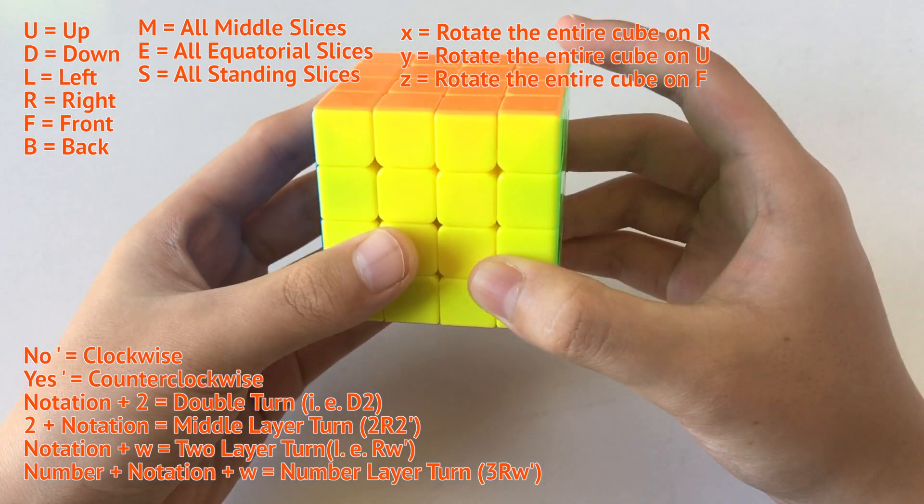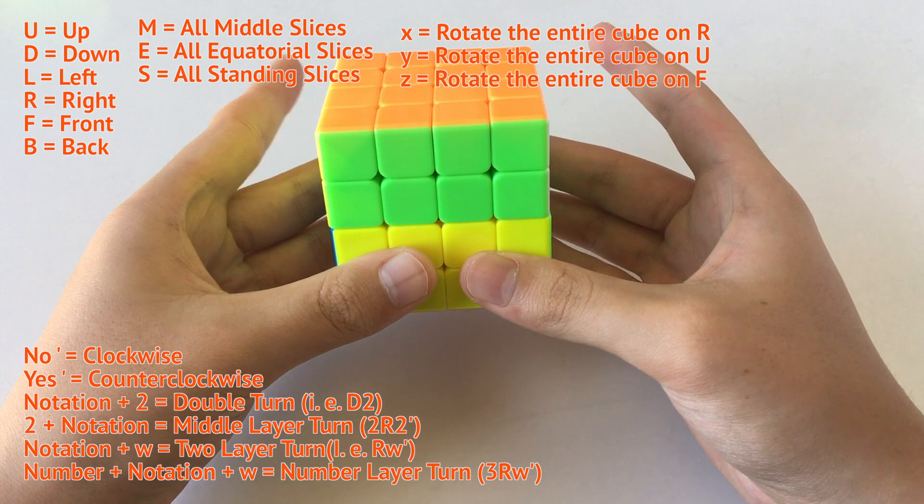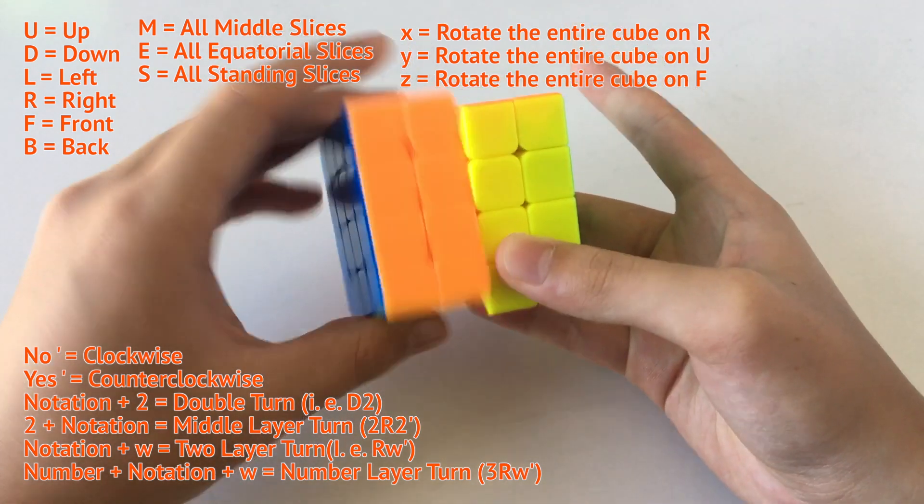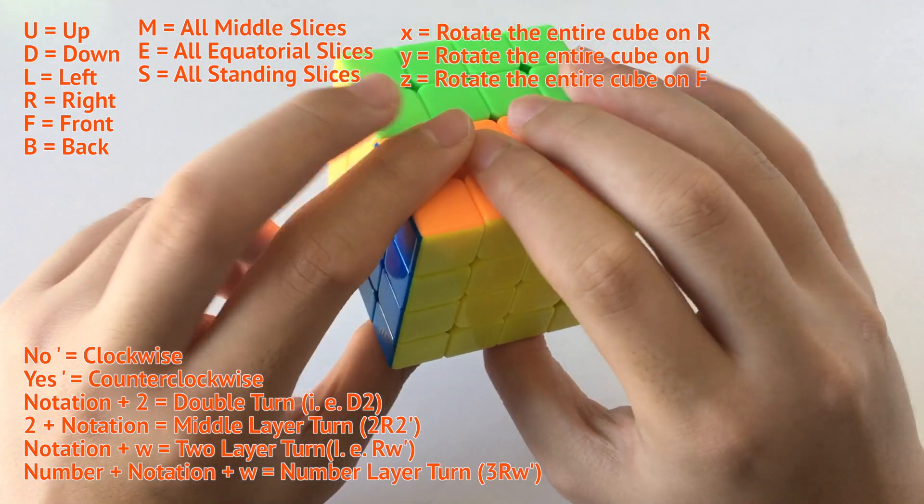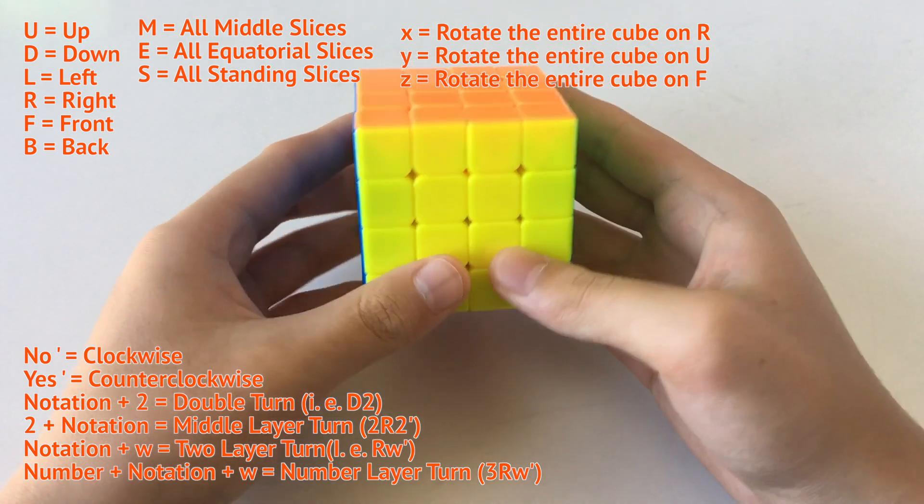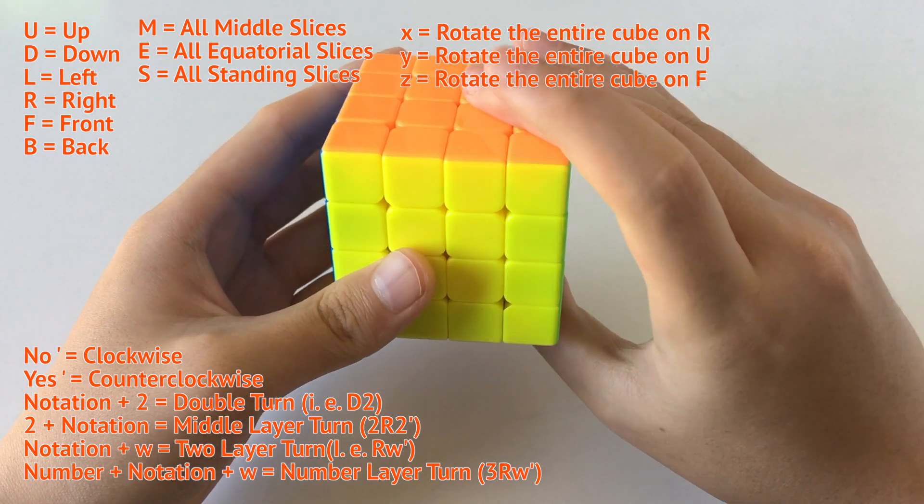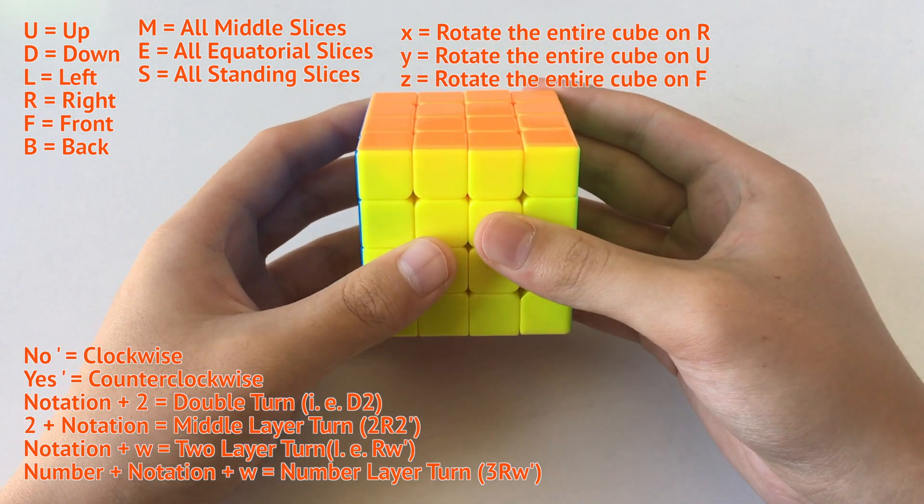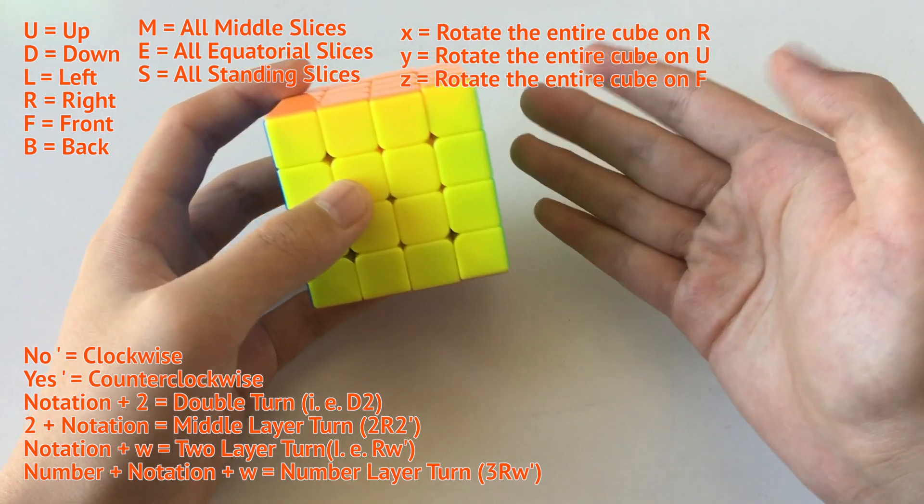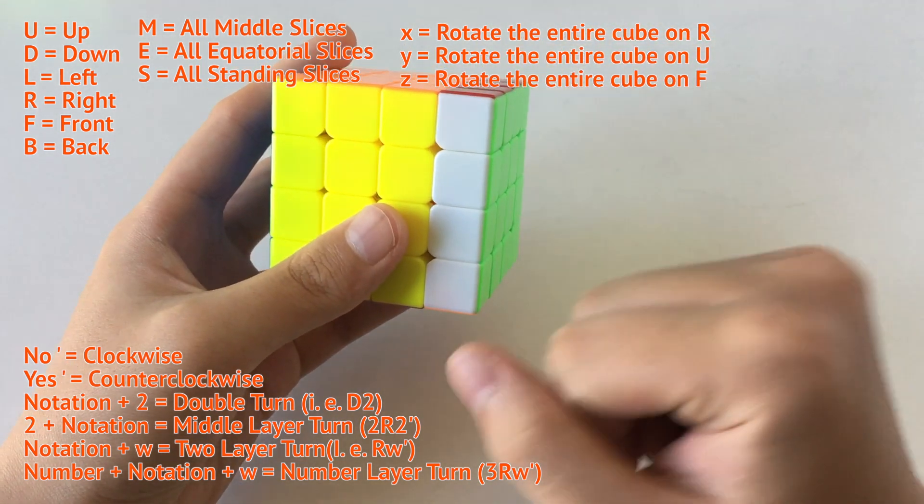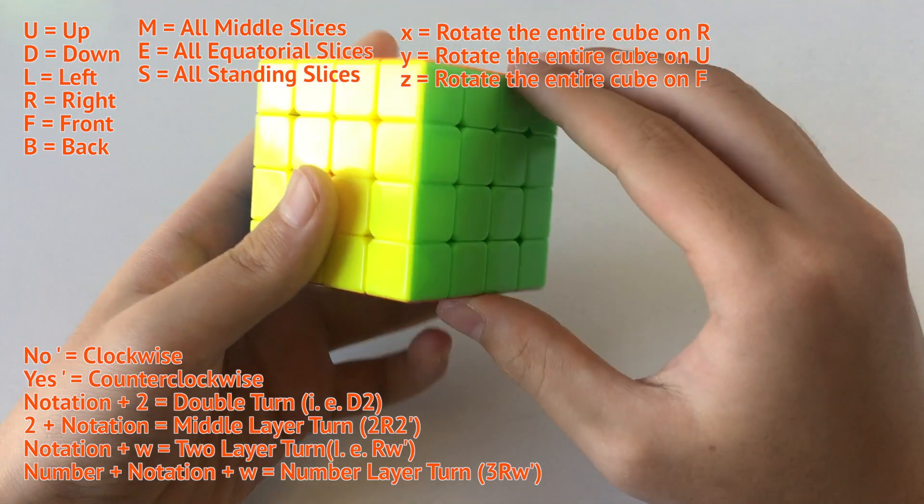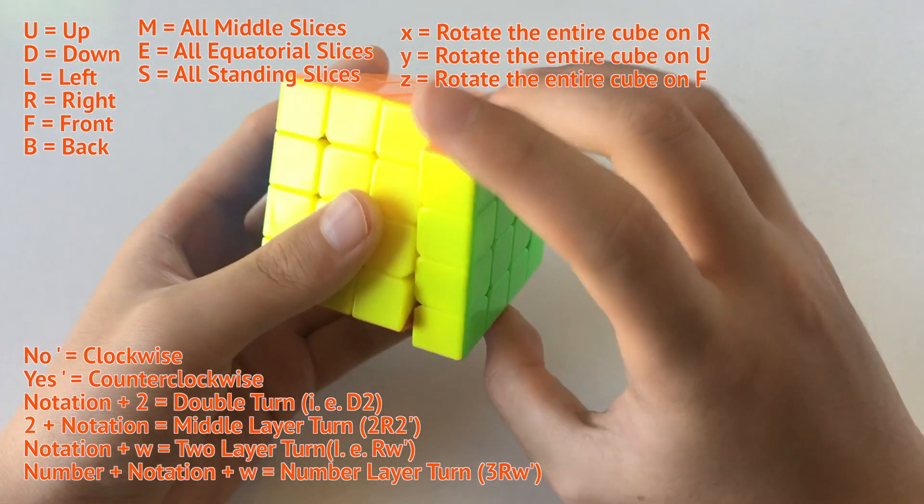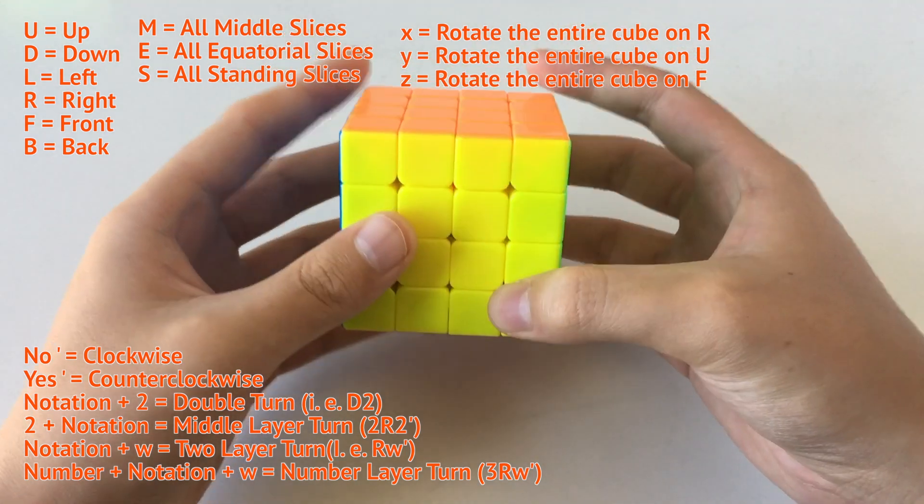This will be the Rw'. This will be the Uw. Like, etc. So Lw, Lw', Bw', Bw. And now, for example, Rw2 would be that. In case you didn't know about 2, as in like, 2 following a move, like R2, it basically means to turn the right side two times. Any direction, because the cube has four sides, I mean four edges on each side. So basically any direction you turn it twice, it's going to have the same result.